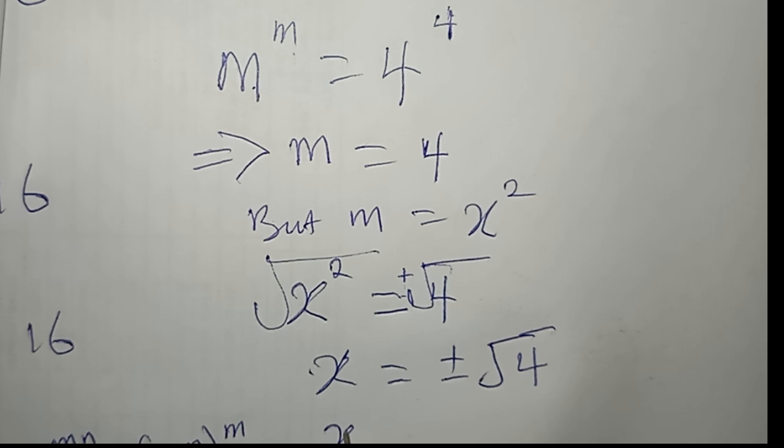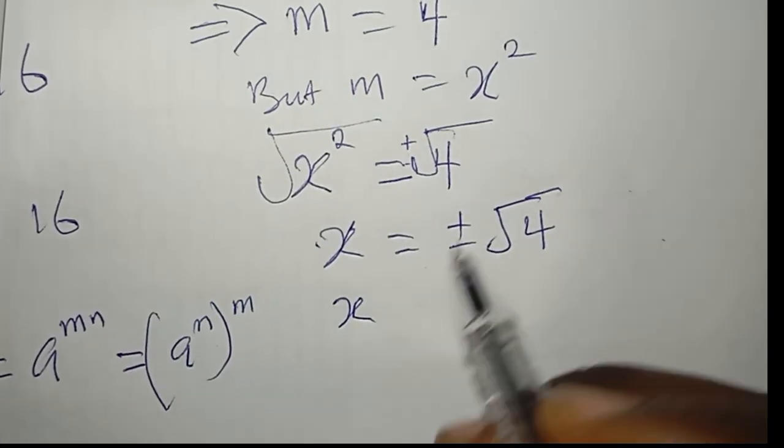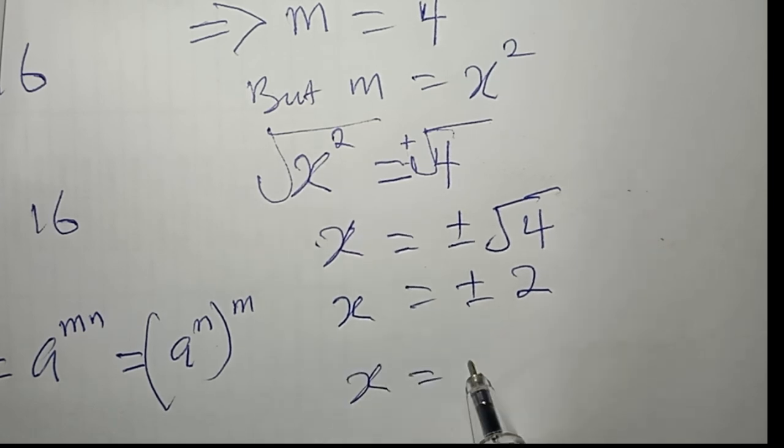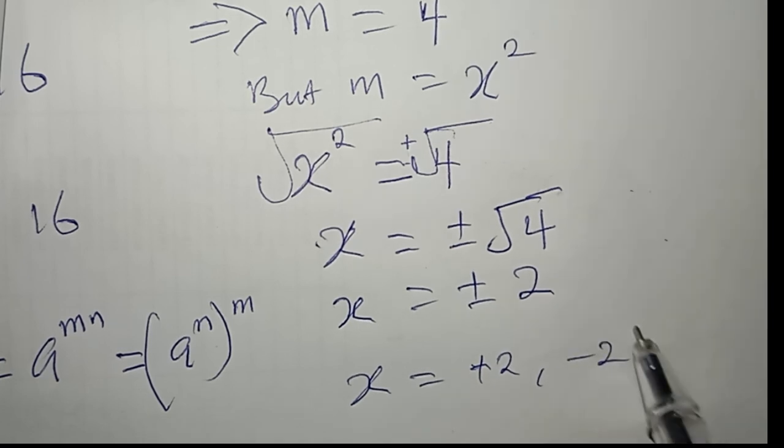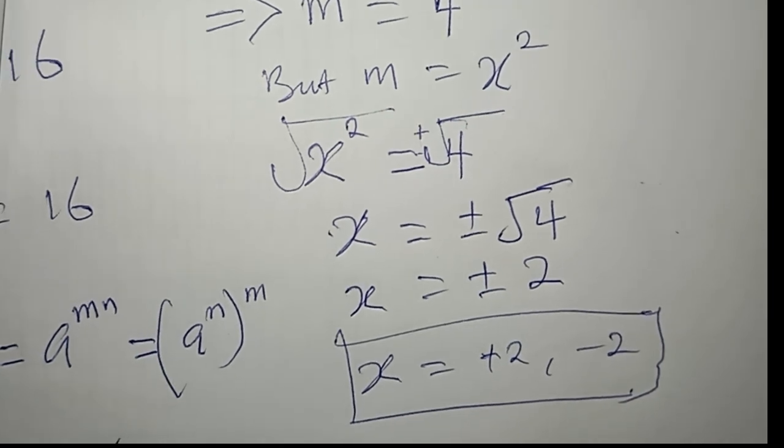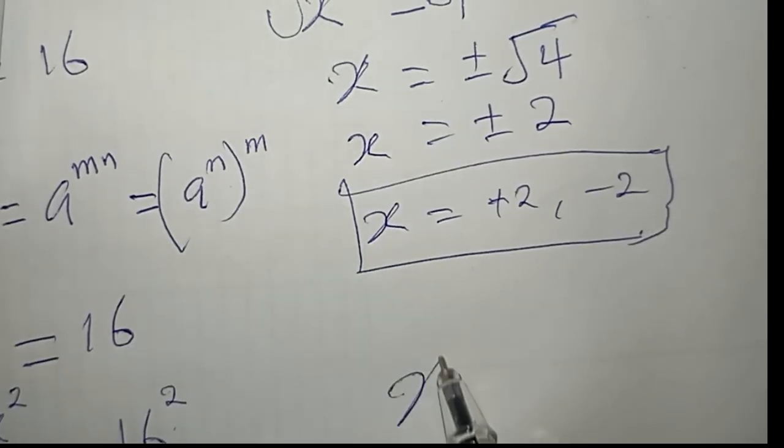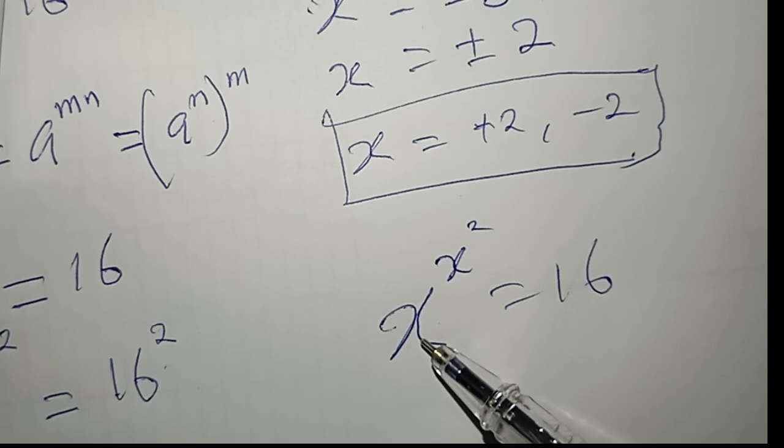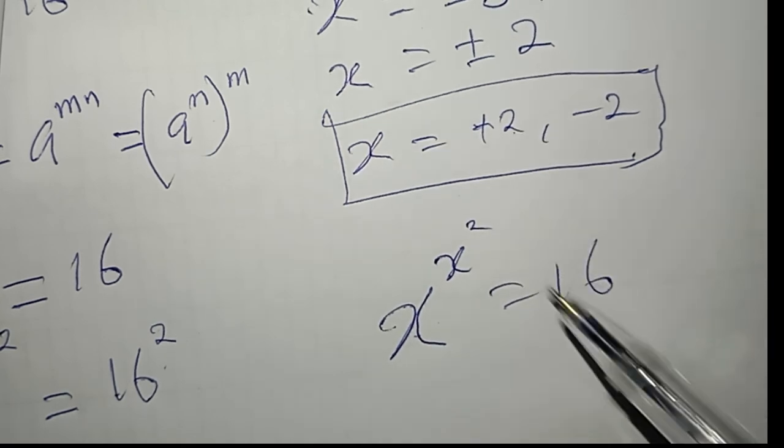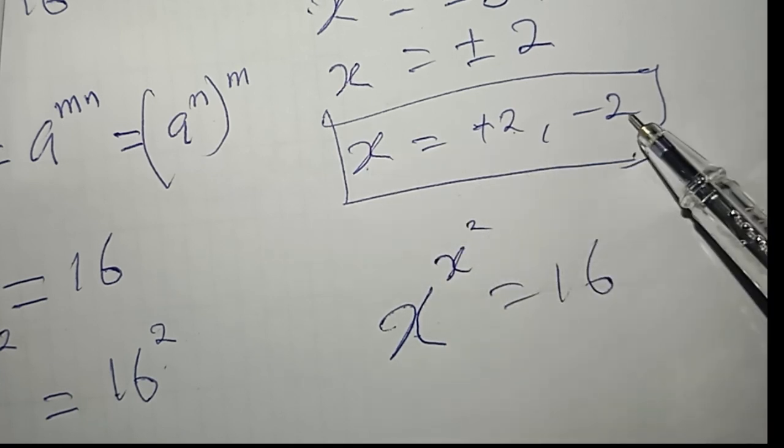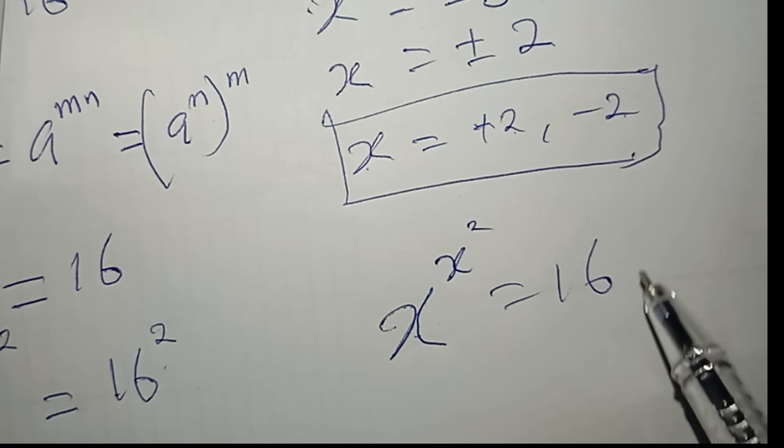So whether x equals positive 2 or negative 2, if you actually put it in the question we are solving - and don't forget the question we just solved is x^(x^2) = 16 - if you substitute x = positive 2, it will satisfy this equation. Or if you substitute x = negative 2, it will also satisfy this equation. So this is how you actually go about it.